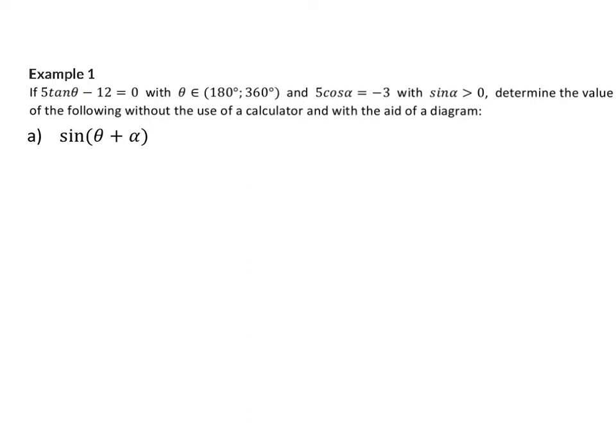Example 1. If 5 tan theta minus 12 is equal to 0, with theta between 180 and 360 degrees, and 5 cos alpha is equal to minus 3, with sin alpha bigger than 0, determine the value of the following without the use of a calculator and with the aid of a diagram. When you read 'without the use of a calculator,' you should already have in mind your 30, 45, and 60 degree triangles. The phrase 'with the aid of a diagram' implies you will have to draw your own triangle using the information given. We have two parts of information: the first about theta, and the second about alpha. We're going to start with the information about theta.